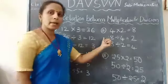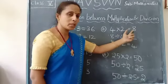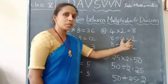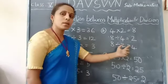Let us go for second example. 4 multiplied by 2 is 8. When we divide 8 with 4, it gives 2. And 8 divided by 2 is 4.